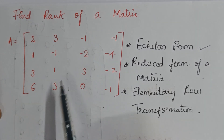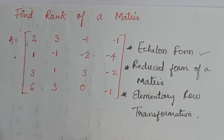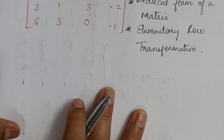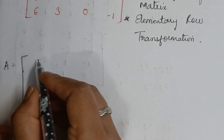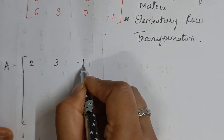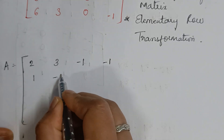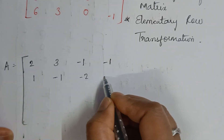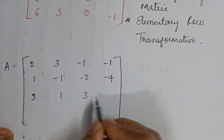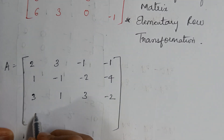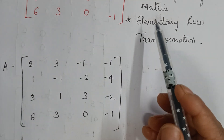Now let's try to find the rank of this matrix. I'll rewrite the question — it's a good habit to rewrite the question. So this is the given matrix: 2, 3, -1, -1 / 1, -1, -2, -4 / 3, 1, 3, -2 / 6, 3, 0, -1.